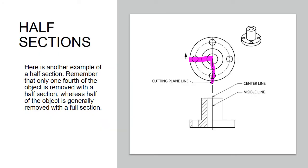Here's another view of a half section. Remember that one-fourth of the object is removed with the half section, whereas half of the object is generally removed with a full section. We're just taking a quarter slice out of that apple. You can see on that pink line where I've outlined it, that part of the component has been removed to give us a view of the interior of the component.